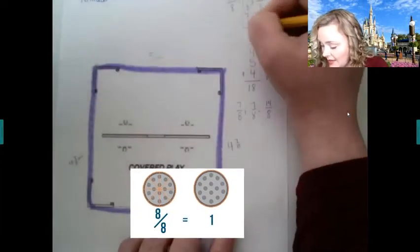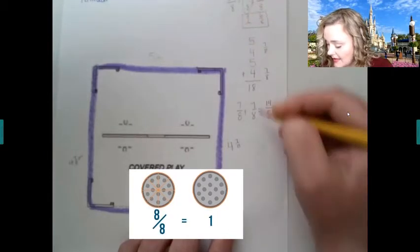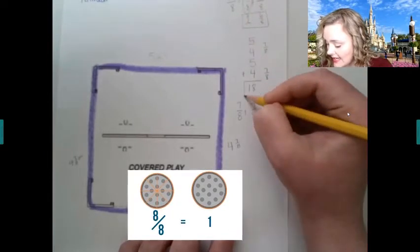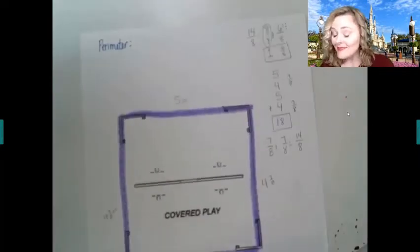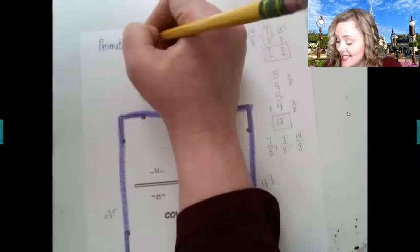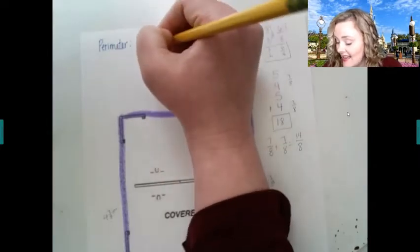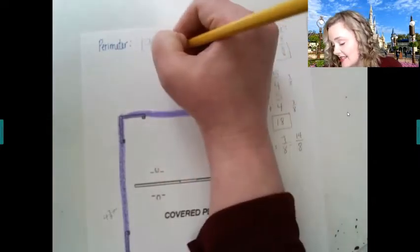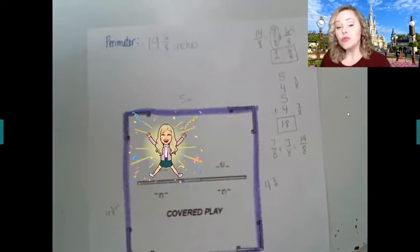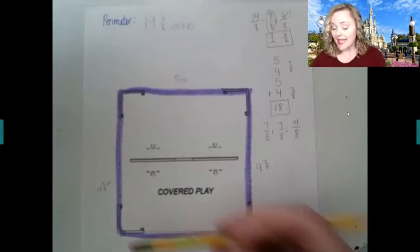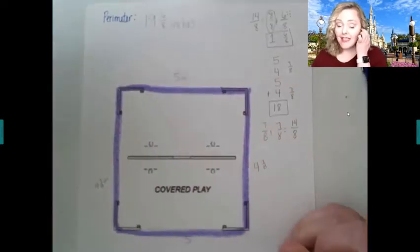So I can look down here, I can add one and six eighths plus the whole number eighteen. So my total perimeter is eighteen plus one - nineteen and six eighths inches, okay. So to find perimeter you simply add all the sides.